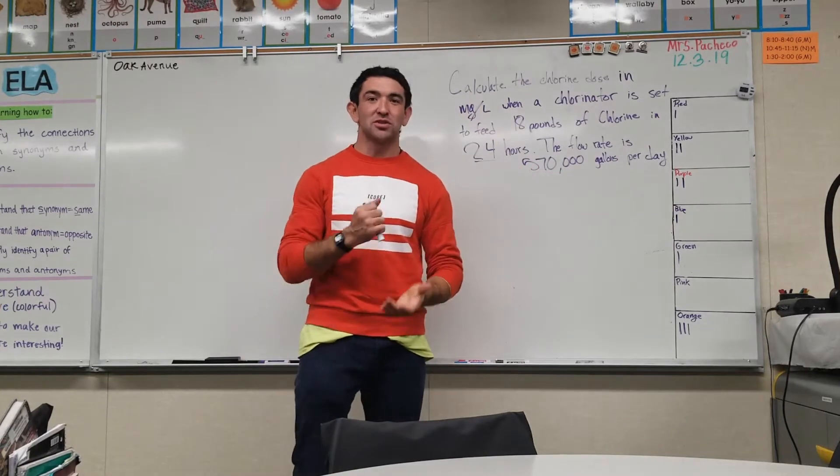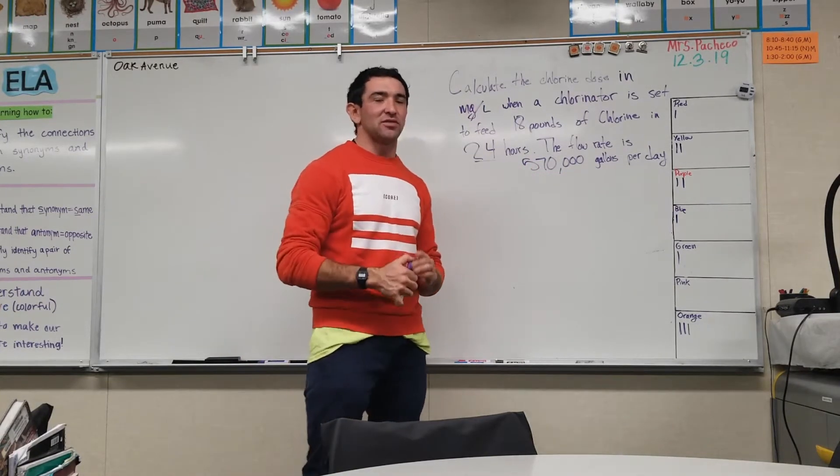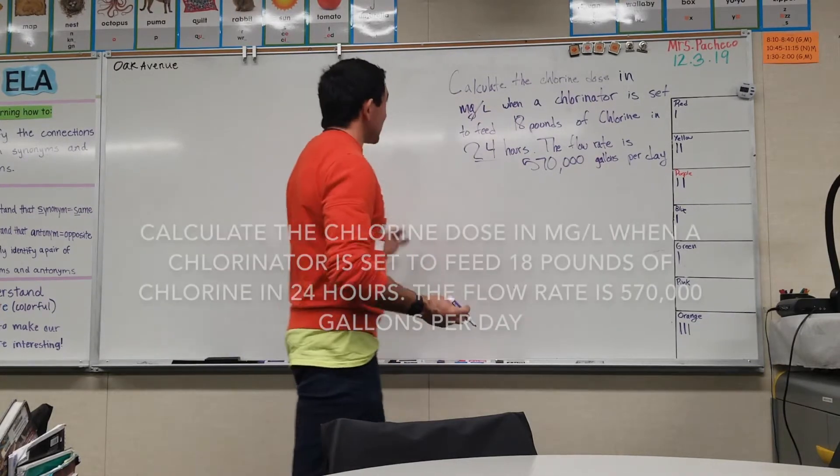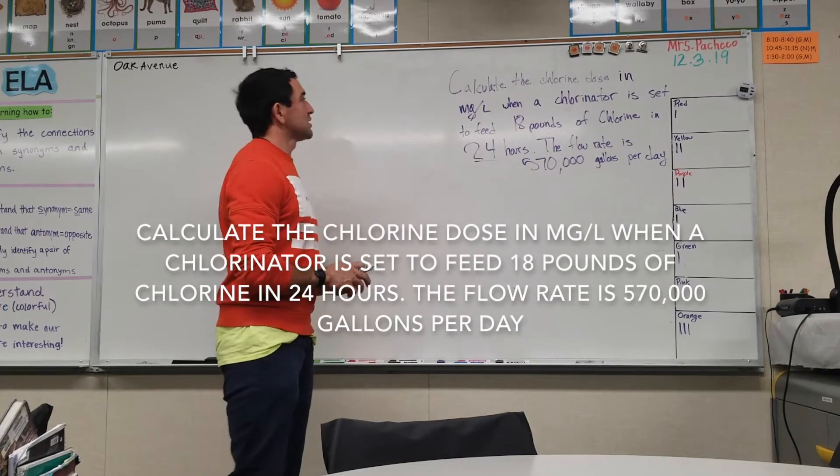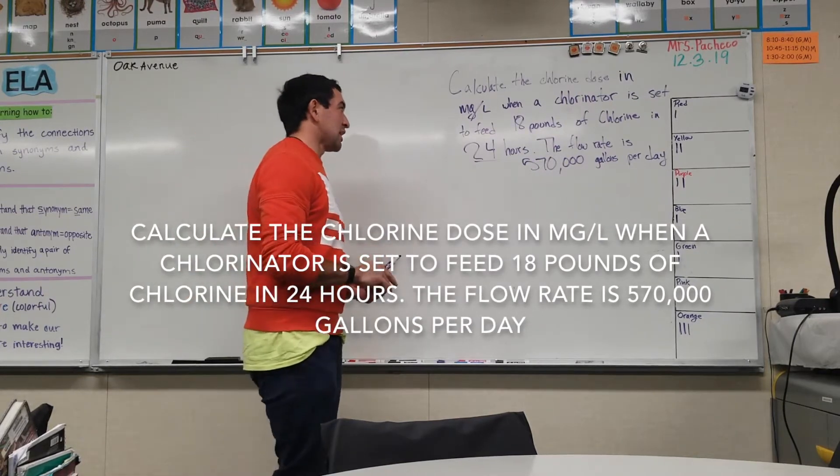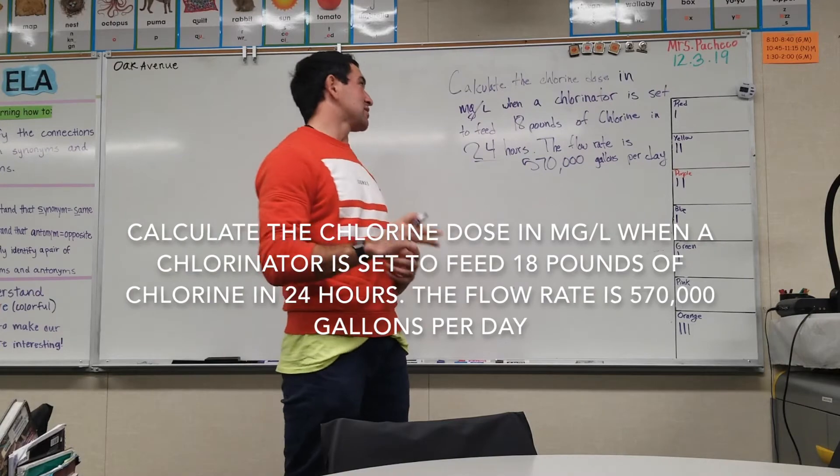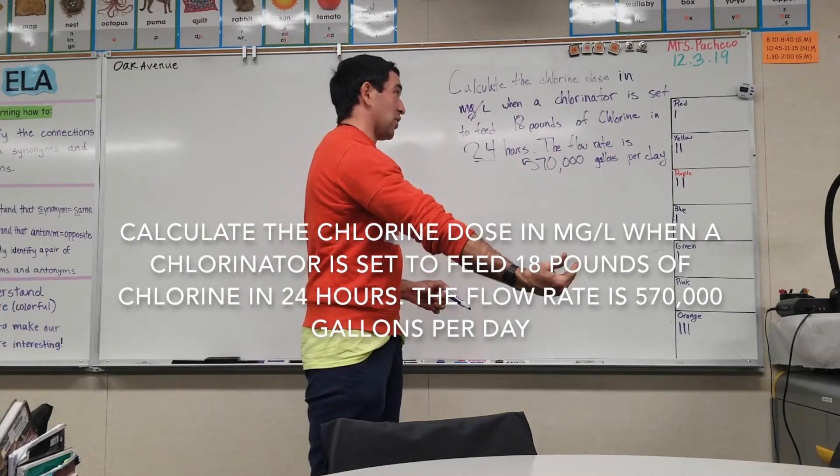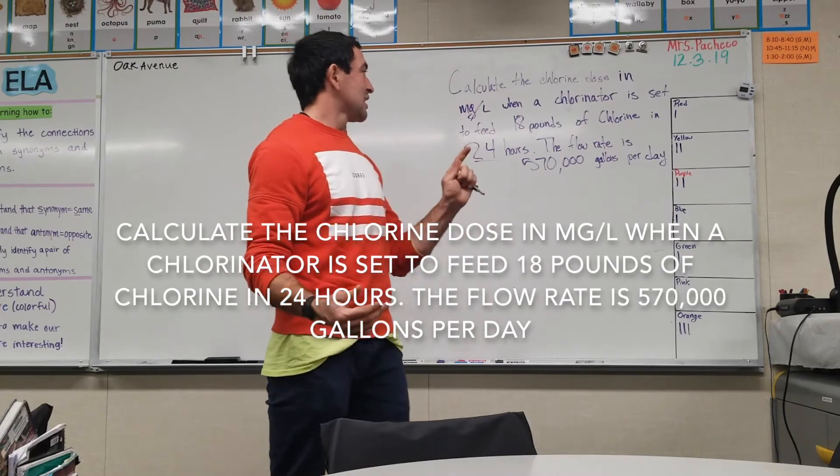Check that out if you haven't yet, it's a fun one. So the question is: calculate the chlorine dose in milligrams per liter when a chlorinator is set to feed 18 pounds of chlorine in 24 hours, and the flow rate is 570 thousand gallons per day.